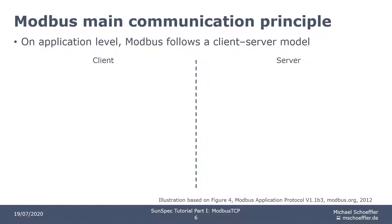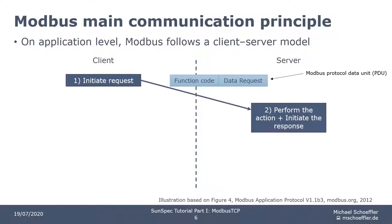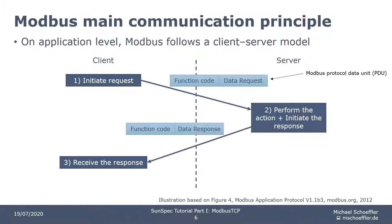What you see here is the main communication principle of Modbus on the application layer. Modbus follows a client-server model. The client initiates a request and sends a so-called Modbus Protocol Data Unit (PDU) to the server. The PDU consists of a function code field and a data request field. The server receives the PDU and then performs some action, for example changing or returning some data. The response is sent back to the client as a PDU with a function code field and a data response field.